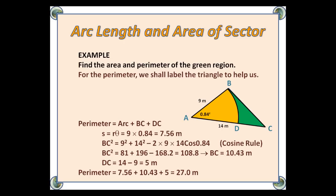For the perimeter, we need to consider how it's made up, and I've labelled the triangle ABCD to help us. We need an arc, we need BC, and we need DC.